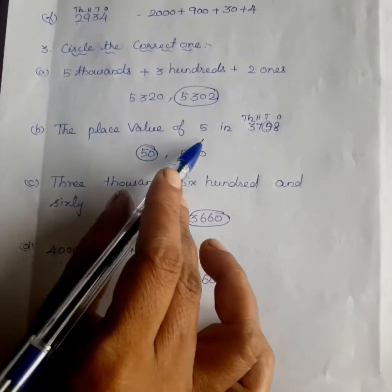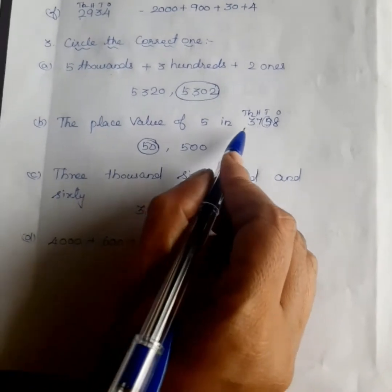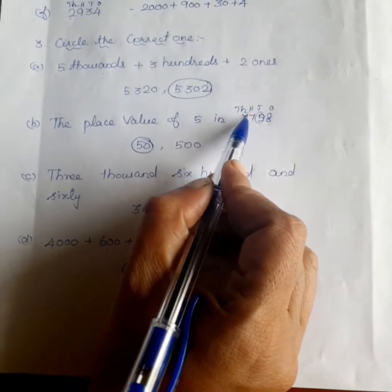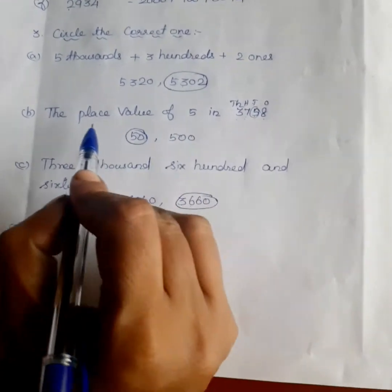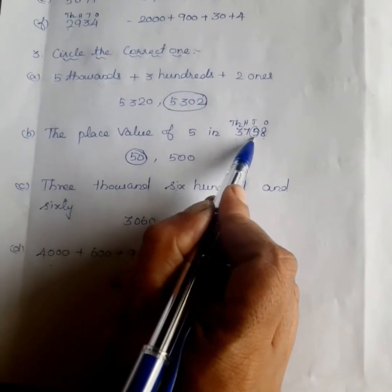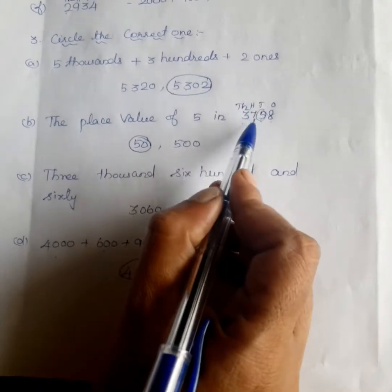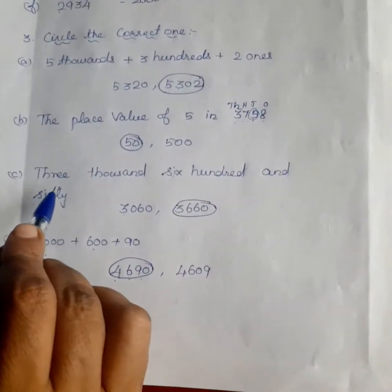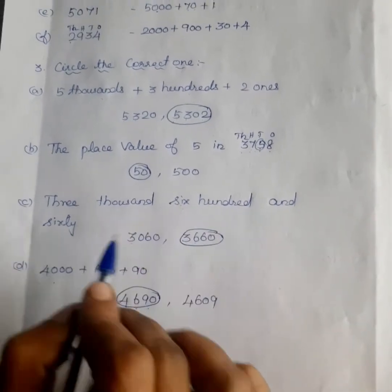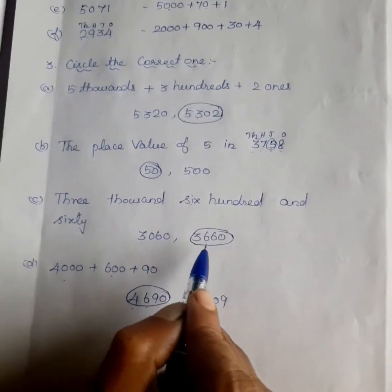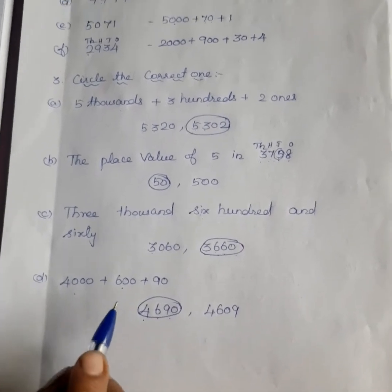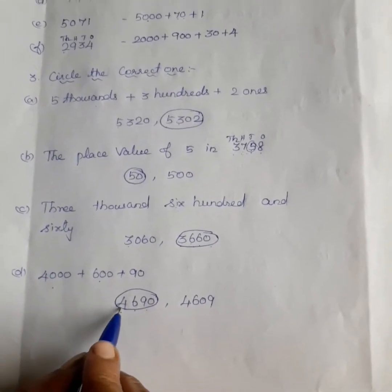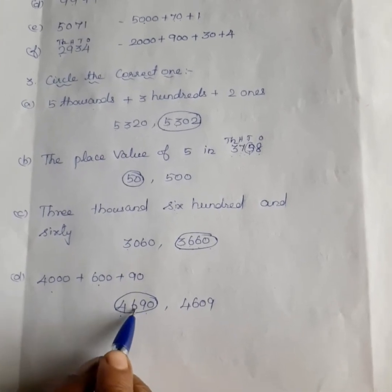The place value of 5 in 3758 — places are 1, 10, 100, 1000. The place value of 5 is at the 10's place, so 5 into 10 equals 50. For 3660, the expanded form is 3000 plus 600 plus 60 plus 0. For 4000 plus 600 plus 90, the number is 4690.